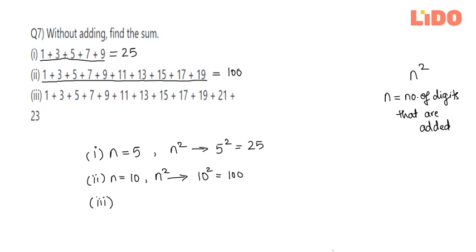To the third one. That is a really long string up to the odd number 23, but we need to find the value of n. So let's count how many digits have been added. We have 1, 2, 3, 4, 5, 6, 7, 8, 9, 10, 11, and 12. So n in this case is 12.